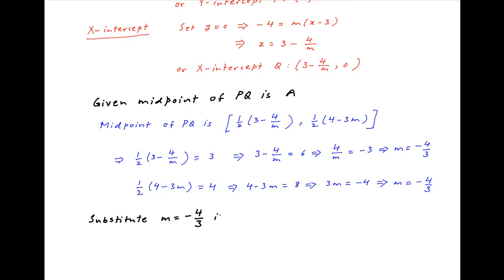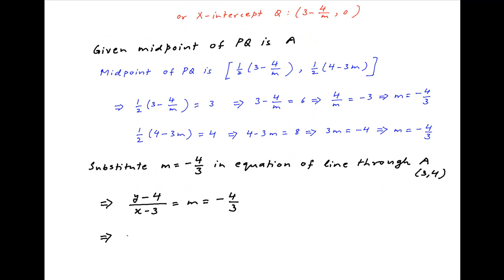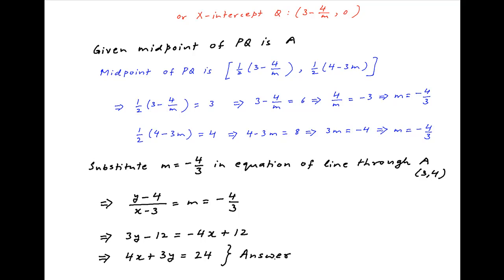Therefore the equation of the line through point A with slope equal to minus 4 upon 3 can be written as y minus 4 divided by x minus 3 is equal to minus 4 upon 3. Cross multiplying, we get 3y minus 12 is equal to minus 4x plus 12, which implies that 4x plus 3y is equal to 24, which is the required answer.